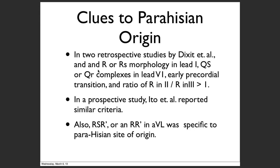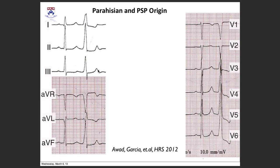For parahisian origin: in lead 1, if you see a big R or big R with small s, or big Q with small r in V1, with a relatively early transition, and the ratio of R in lead 2 to R in lead 3 is more than 1 — that pattern points toward a parahisian origin.